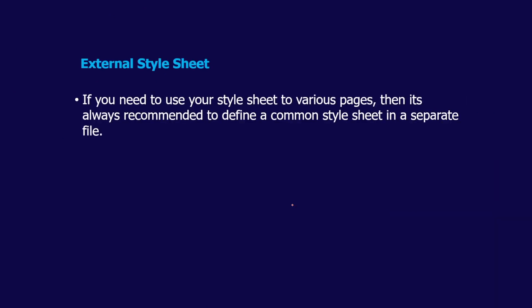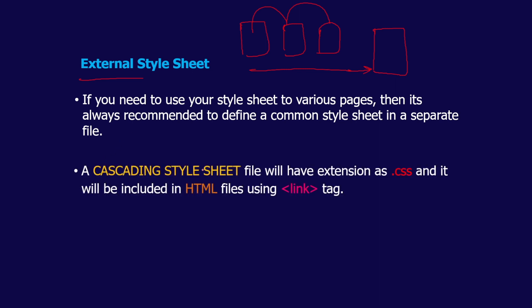If you need to use your style sheet across various pages, it is always recommended to define a common style sheet in a separate file. In your application there will be multiple pages that share the same background, font size, and other similarities. So having one style sheet linked to all pages makes your work easier — rather than writing styles in every page, you write once and link it everywhere. A CSS file has the extension .css and is included using the link tag.